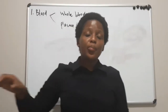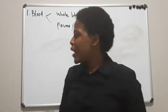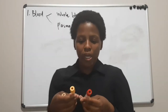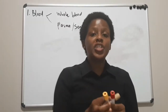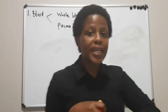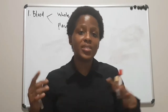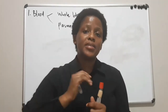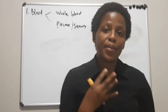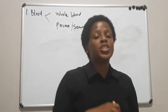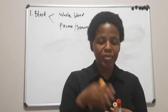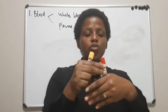That is the blood sample we would usually get. Now, what are those evacuated tubes we would usually use? I will talk about them in the order of draw, because the order of draw is very important. If different tests are requested that use different tubes, the phlebotomist must follow the correct order of draw to minimize contamination between tubes, which can cause erroneous results.